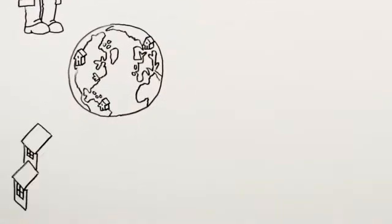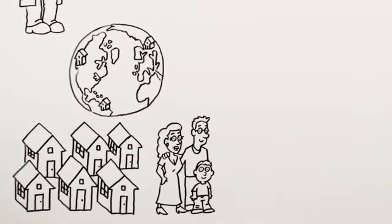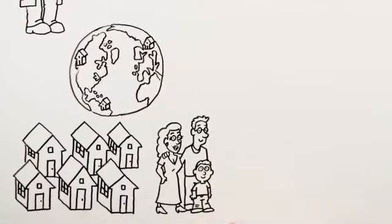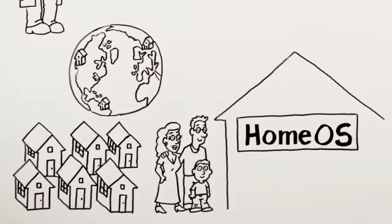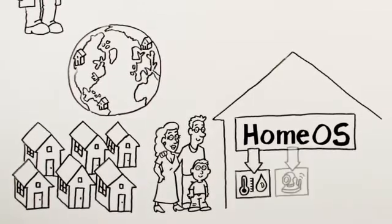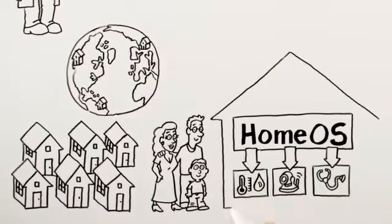To simplify deploying sensors and devices into homes, Albert installs a Home Hub, a Windows computer running the HomeOS software. The Home Hub supports discovery and setup of several different types of devices.